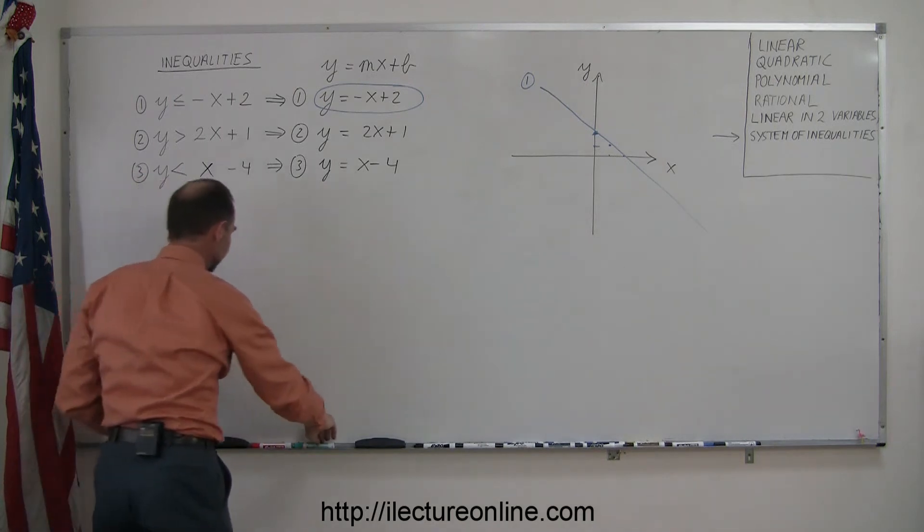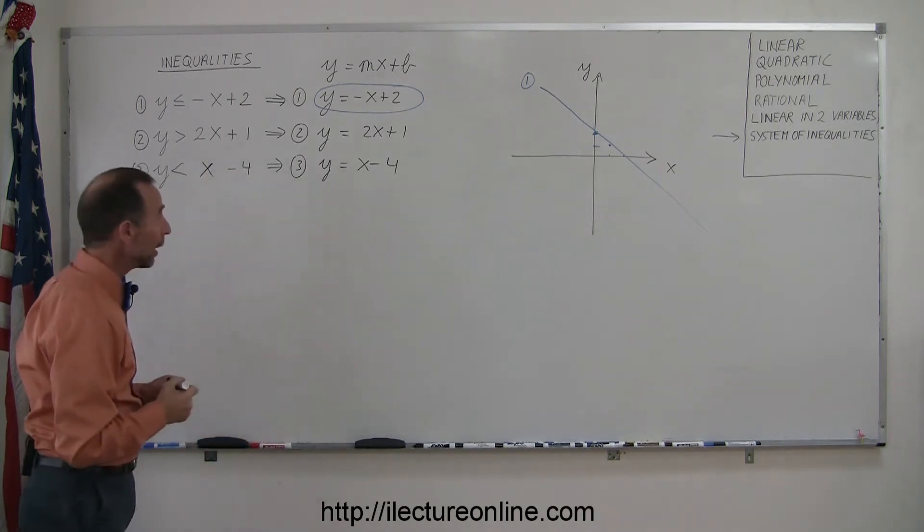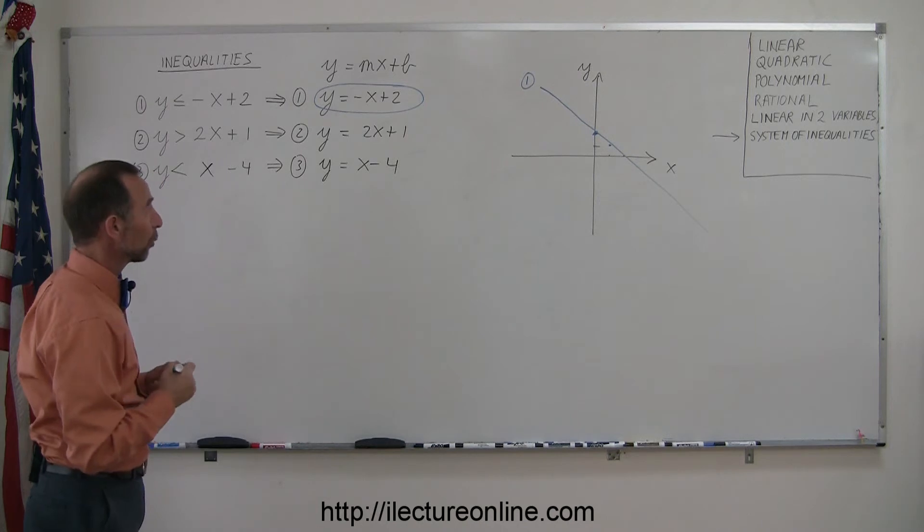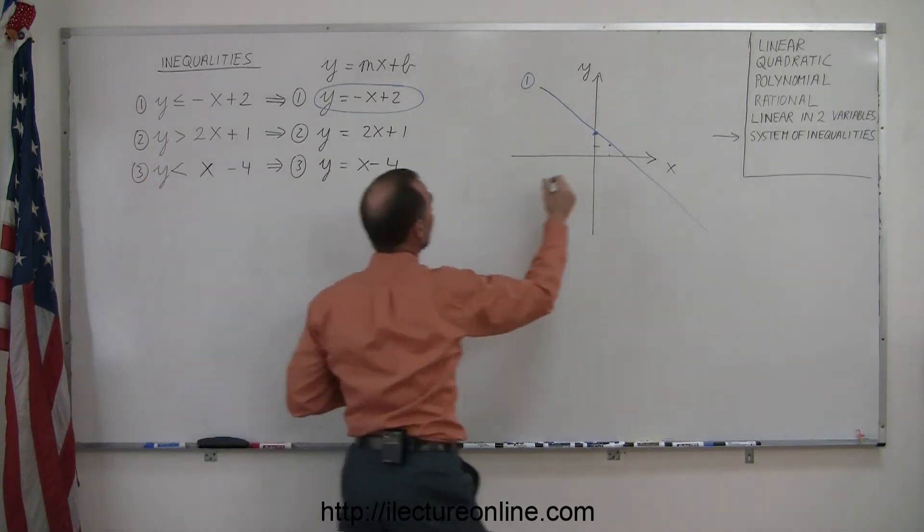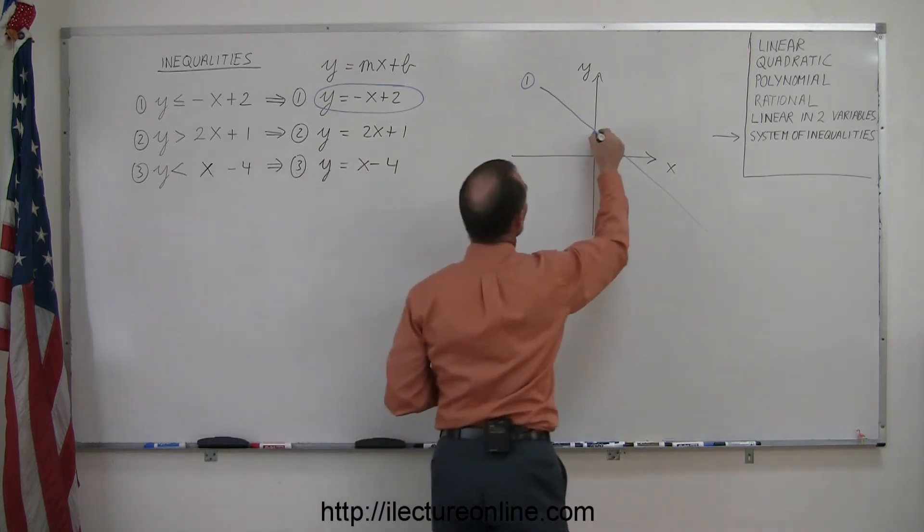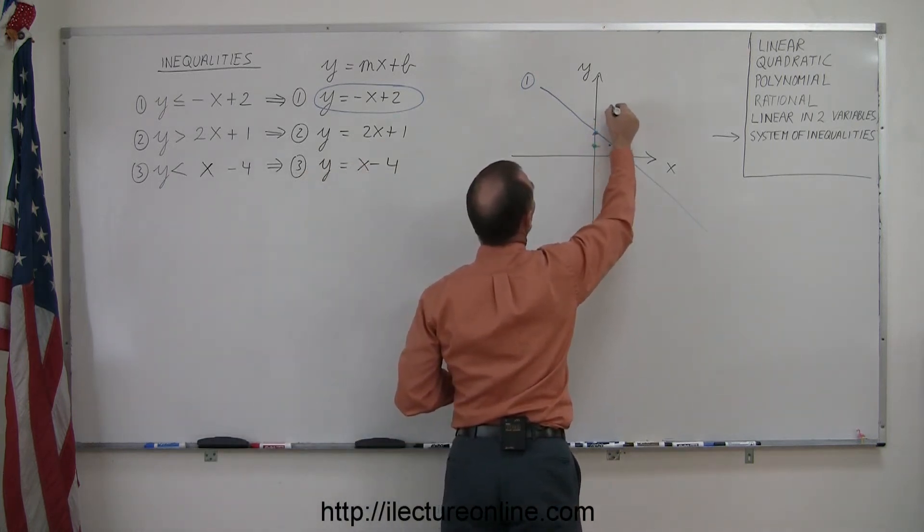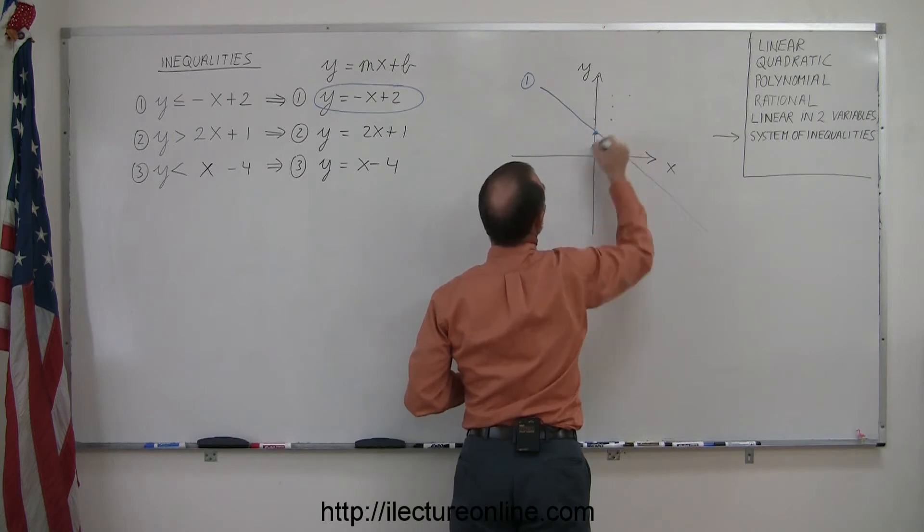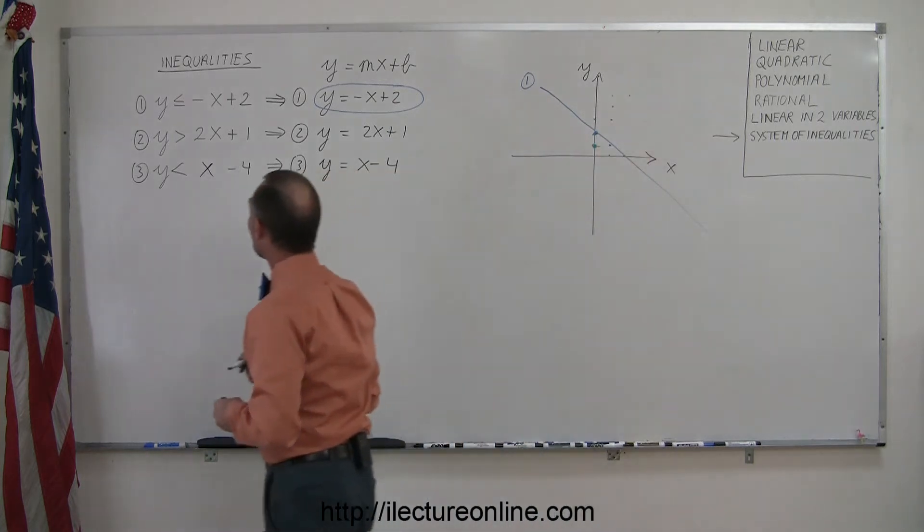Let's grab a different color. Now we look at y equals 2x plus 1. The intercept is plus 1, right here. And the slope is a positive 2. That means you rise 2 and run 1, rise 2 and run 1. Connect those three dots, and you have a new line.